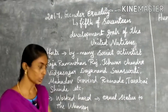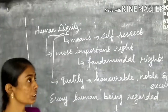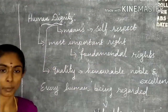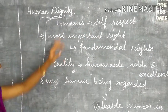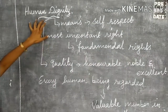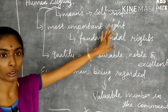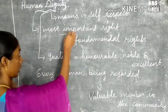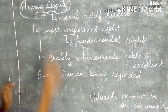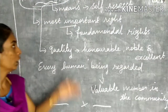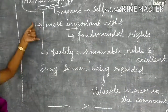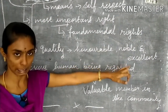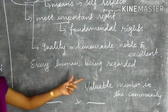The next topic is human dignity. Dignity means self-respect. Human dignity is the most important right, and from it all the fundamental rights are derived. Human dignity is the best quality of being honorable, noble, and excellent.